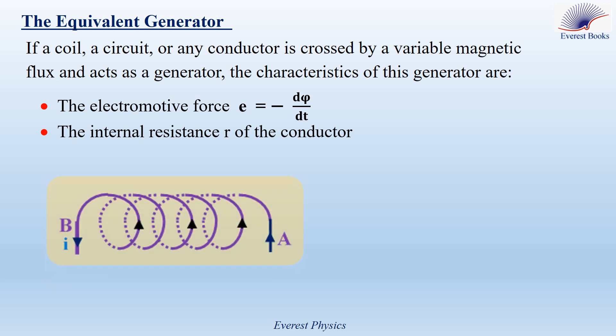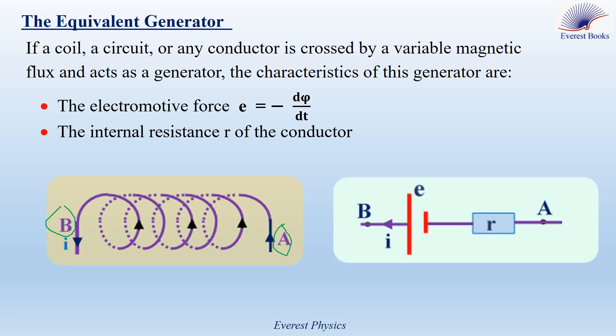Consider a coil with terminals A and B carrying a current from A to B. We want to draw the equivalent generator, which is drawn as a series combination of the internal resistance and the ideal battery. When drawing the equivalent generator, pay attention to four points. First, locate the terminals of the coil on the figure. Second, indicate correctly the direction of the current — as shown, the current is from A to B.